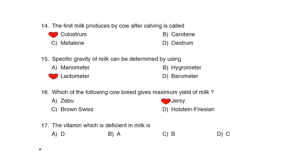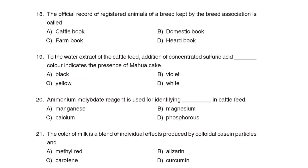17th Question: The vitamin which is deficient in milk is Option D: Vitamin C. 18th Question: The official record of registered animals of a breed kept by the breed association is called Option D: Herdbook.